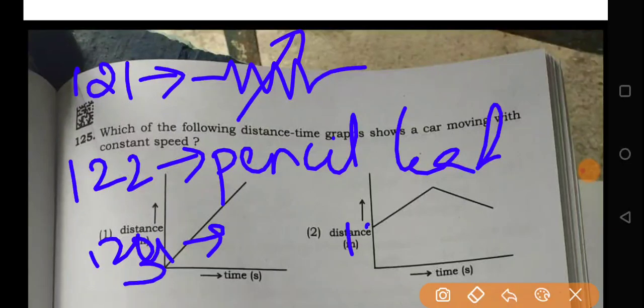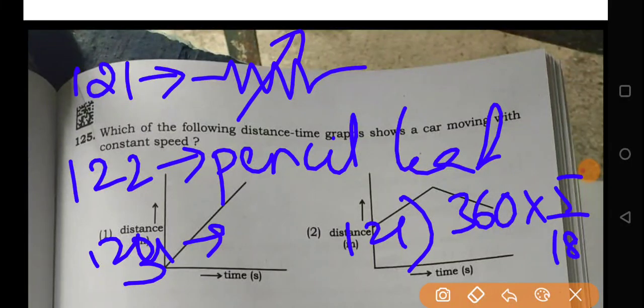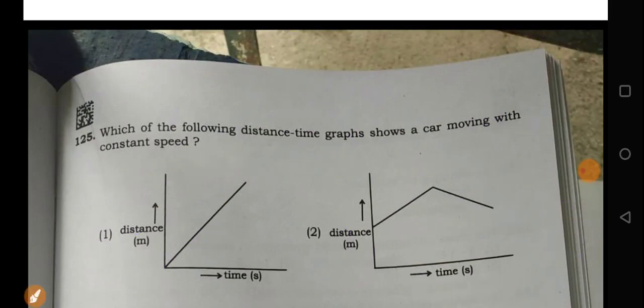For 123, okay. For 124, the answer is 3:16. Just multiply 5 by 18, that's it. It is 100 meters per second.